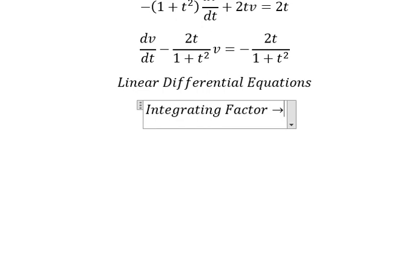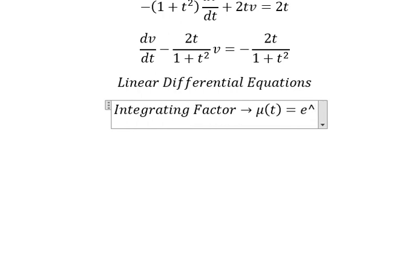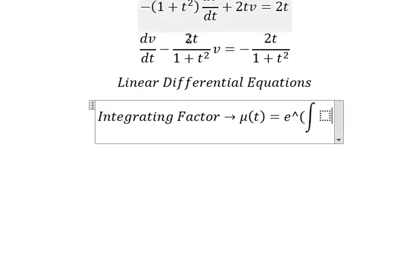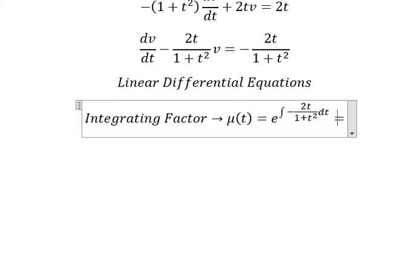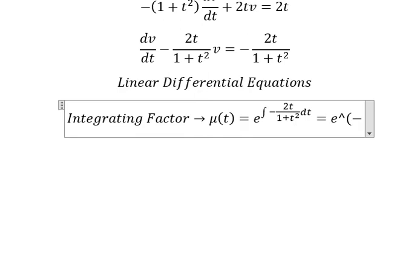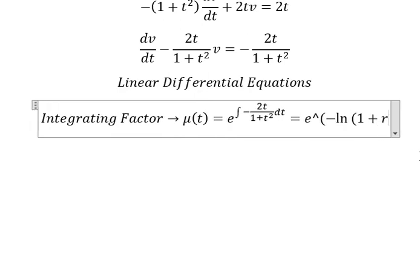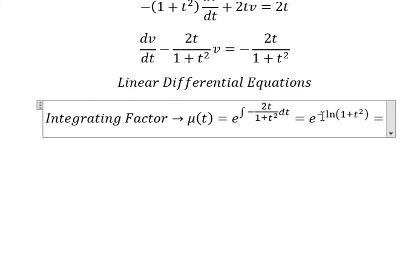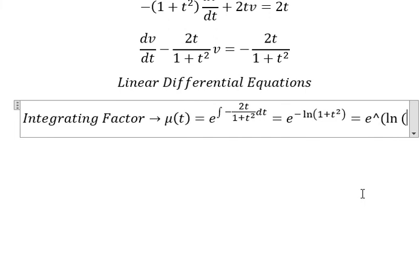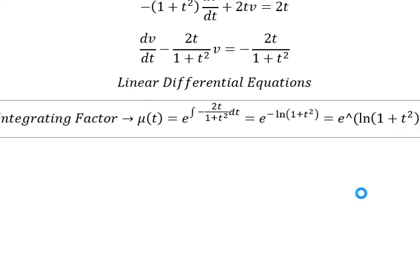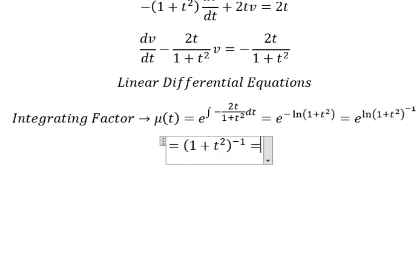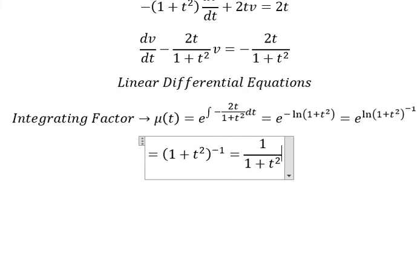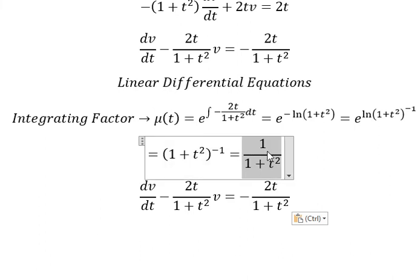So we need to find the integrating factor, which equals e to the power of the integral. The coefficient next to v is used for the integrating factor. The integral of that gives us negative ln of 1 plus t squared. Simplifying, we get 1 plus t squared to the power of negative 1, which is 1 over 1 plus t squared. That means we multiply both sides by this integrating factor.